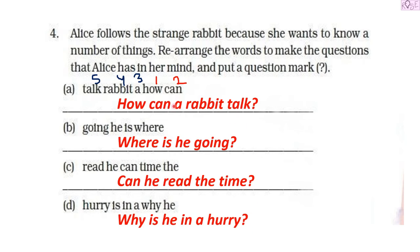We have arranged all the jumbled words into proper, correct, meaningful sentences and put question marks at the end to indicate that these are questions — the questions coming in Alice's mind while she was following the rabbit. We are done with this activity. We'll meet next time with another fun activity, poem, or story. Until then, bye!